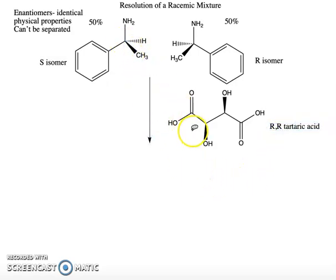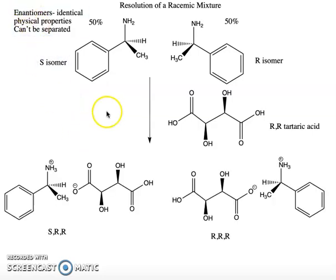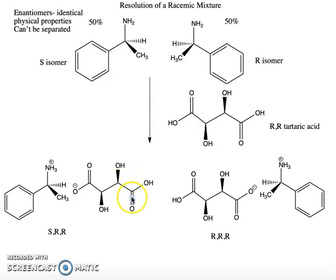Since the amine is a base and tartaric acid is an acid, the acid is going to protonate the base — it's going to protonate both bases — and we're going to get the acid-base salt as the product. The S isomer reacts with R,R tartaric acid to form a salt with a protonated amine and a deprotonated acid, giving the S,R,R salt with three stereocenters. The R enantiomer of the base reacts with the acid to give the R,R,R salt.